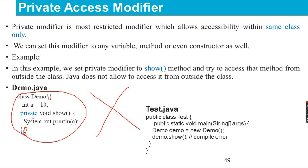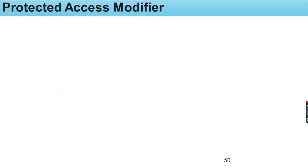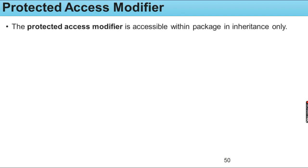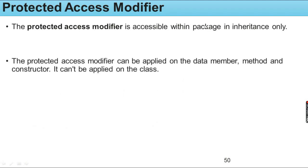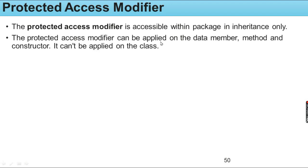For example, if you are looking at a new package with a new class, the name is Private Access Modifier. The next one is Protected Access Modifier. Protected Access Modifier is accessible within a package and implemented in inheritance only. The classes should be placed in the same package.